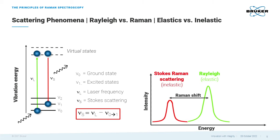The light scattered in the process has a different frequency and thus energy than the incident light. This is the so-called Stokes-Raman scattering or Raman shift and serves as a fingerprint of the molecule. However, only one out of one million of scattering events yields a frequency different from the incident laser light — only one out of one million photons is Raman scattered.